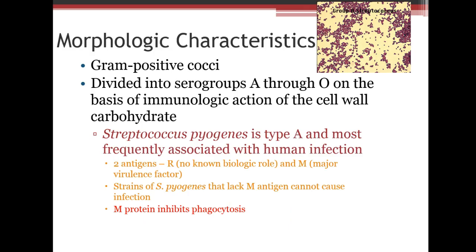Gram-positive cocci are divided into serial groups A through O. Streptococcus pyogenes is type A and most frequently associated with human infection. There are two antigens: R and M. The M antigen is the major virulence factor that inhibits phagocytosis, which is what makes it so virulent.